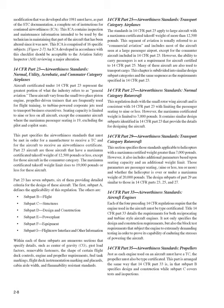Part 23 has seven subparts, six providing detailed criteria for the design of these aircraft. Subpart A defines applicability. The others are: Subpart B, Flight; Subpart C, Structures; Subpart D, Design and Construction; Subpart E, Power Plant; Subpart F, Equipment; and Subpart G, Flight Crew Interface and Other Information. Within each subpart are numerous sections specifying details such as center of gravity (CG), gust load factors, removable fasteners, the shape of certain flight deck controls, engine and propeller requirements, fuel tank markings, flight deck instrumentation markings and placards, and cabin width and flammability resistance standards.